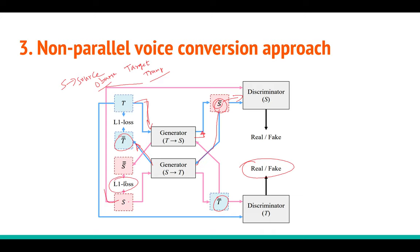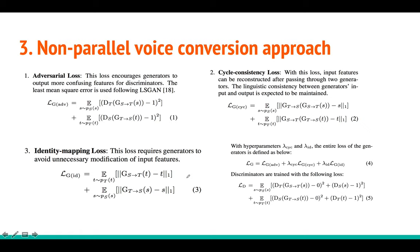There is also a cycle consistency loss using L1, and CycleGAN-VC2 uses an additional discriminator instead of L1 for identity. The overall idea is: two generators and two discriminators ensure the source voice is converted to the target voice while preserving content — meaning phonemes and word-level information are preserved. That is the core idea of the paper.